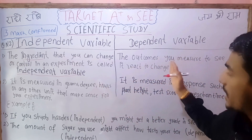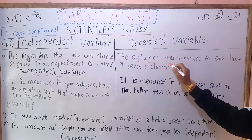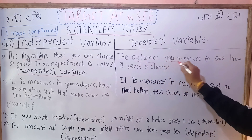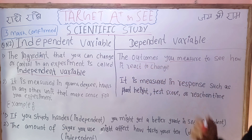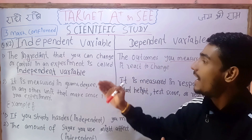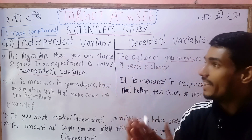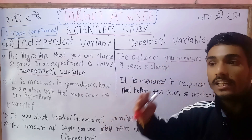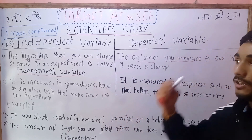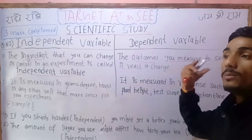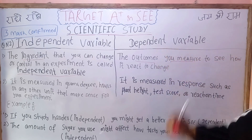What is the dependent variable? The outcomes you measure to see how it reacts to change in an experiment — the substance or ingredient you change and control, and the results or outcomes of the result — that is the dependent variable.